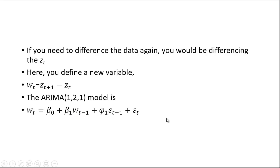Now if it turns out that Z_T is still not stationary, you could possibly difference it again. You would define a new variable W, and difference Z: so W_T equals Z_{T+1} minus Z_T.